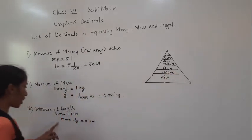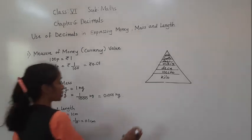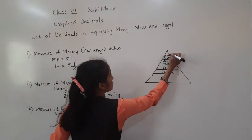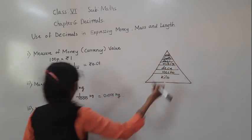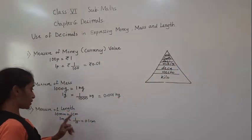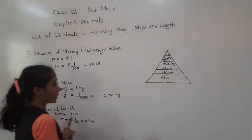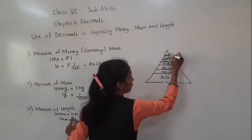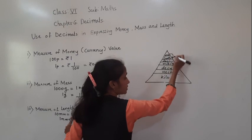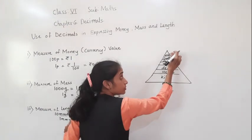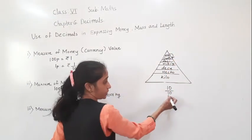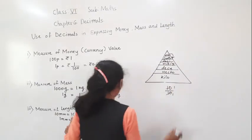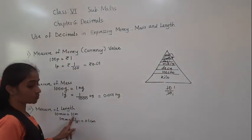So 10 mm — I want to convert into centimeter. Millimeter to centimeter: coming one step down means divide by 10. So 10 mm divided by 10 gives 1 centimeter.